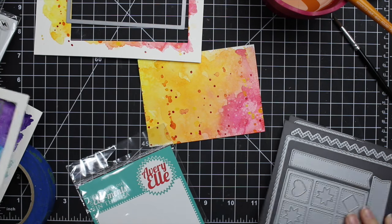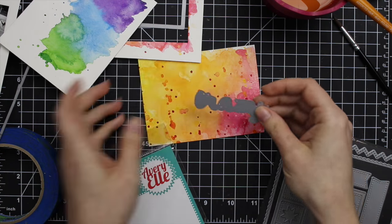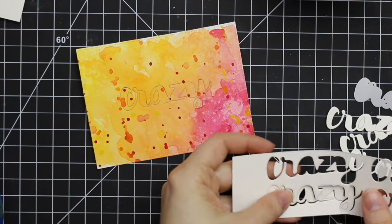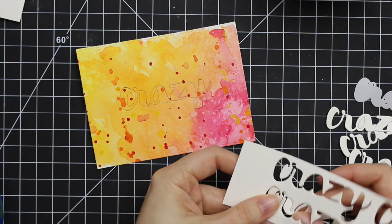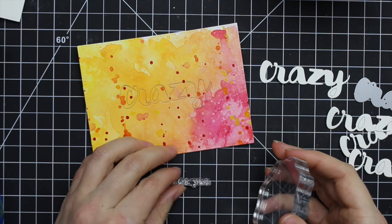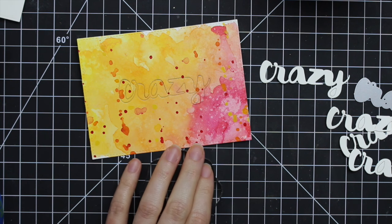So I die cut the pink and orange panel with the stitched die from My Favorite Things Blueprints 20. And then the blue and green panel I die cut with the largest die from the Blueprints 1 Dynamics. And then I set that aside.